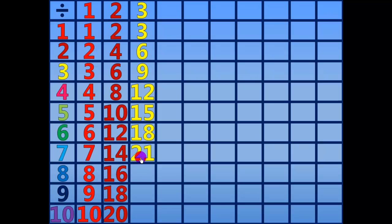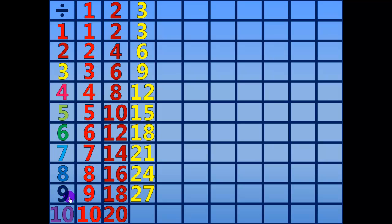21 divided by 3 equals 7. 24 divided by 3 equals 8. 27 divided by 3 equals 9. 30 divided by 3 equals 10.